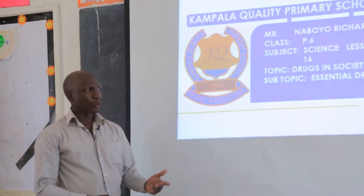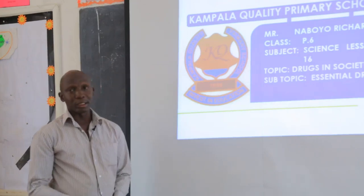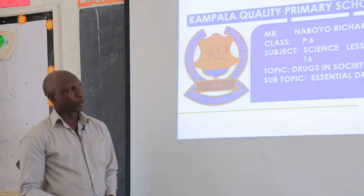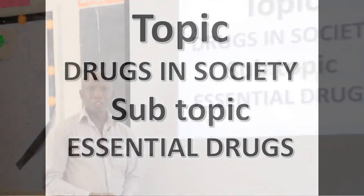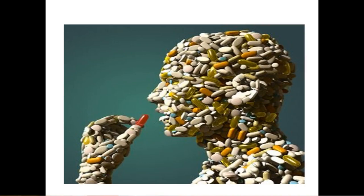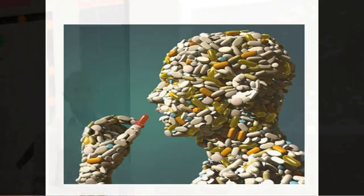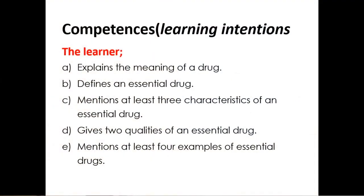Today we shall look at what we call essential drugs. Remember last time we were looking at smoking, but today we are looking at drugs in our society. By the end of this lesson, we shall be knowing the meaning of a drug, be able to define an essential drug, mention at least three characteristics of an essential drug, give two qualities of an essential drug, and mention at least four examples of essential drugs.